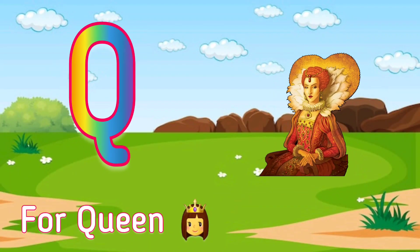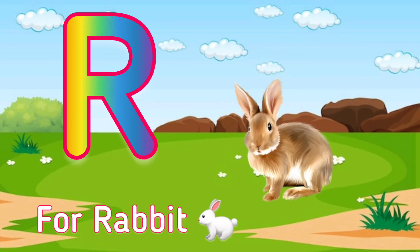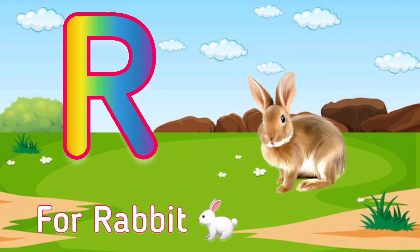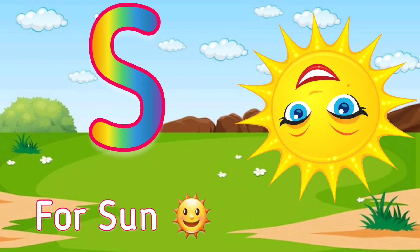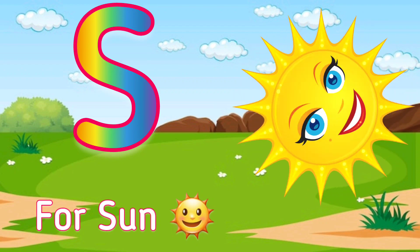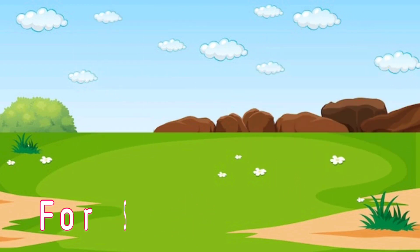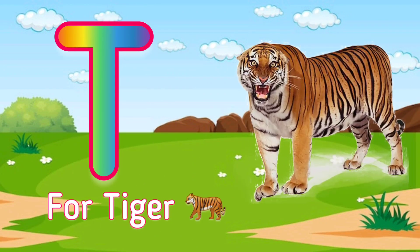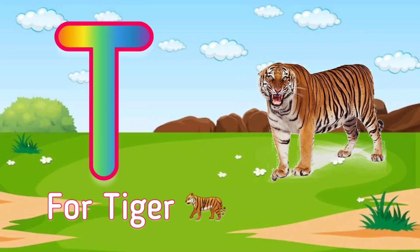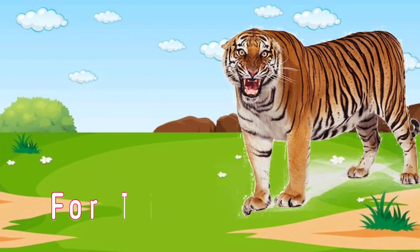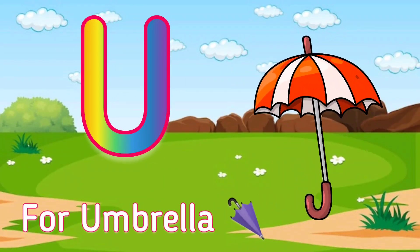R for rabbit, S for sun, B for tiger, U for umbrella,